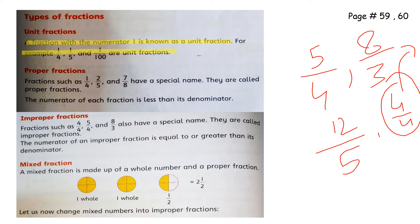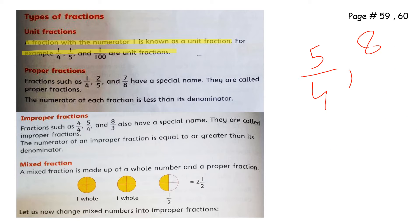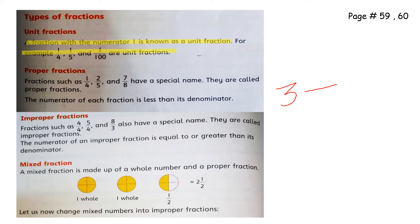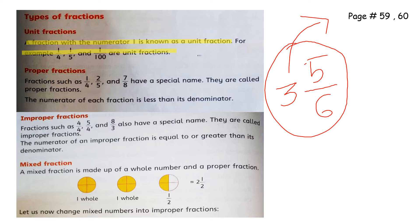Now, what is a mixed fraction? A mixed fraction is the combination of a whole number and a proper fraction. A whole number starts from one and so on. For example, 3 is a whole number, and when we write a proper fraction — where numerator is less than denominator, like 5 by 6 — together this is called a mixed fraction.